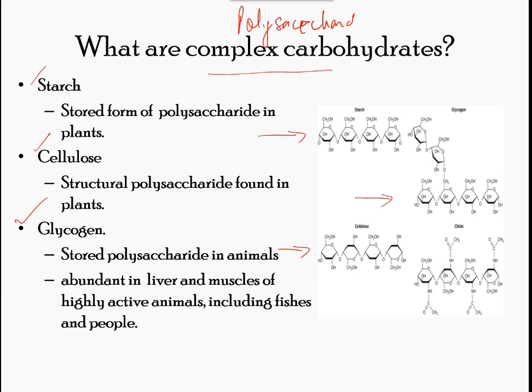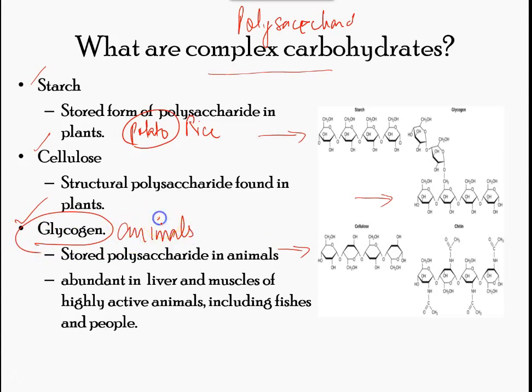Starch is the stored form of carbohydrate sugars in plants and is made up of amylose and amylopectin, both polymers of glucose. Plants are able to synthesize glucose, and the excess glucose is stored as starch in different parts including roots and seeds. The starch consumed by animals is broken down into smaller molecules such as glucose, which the cells can then absorb.